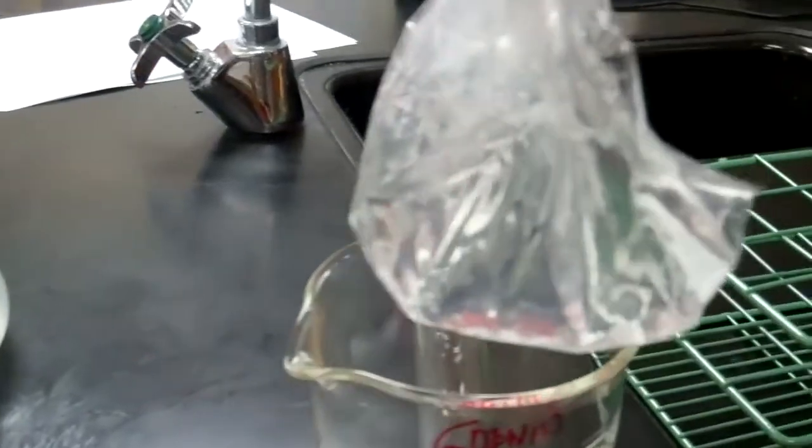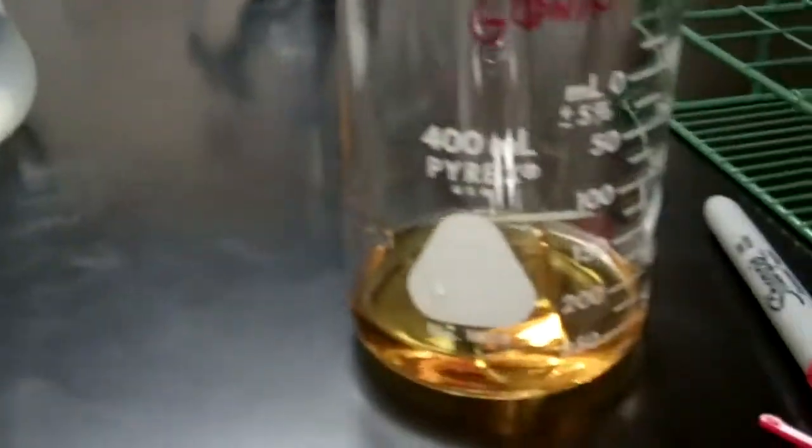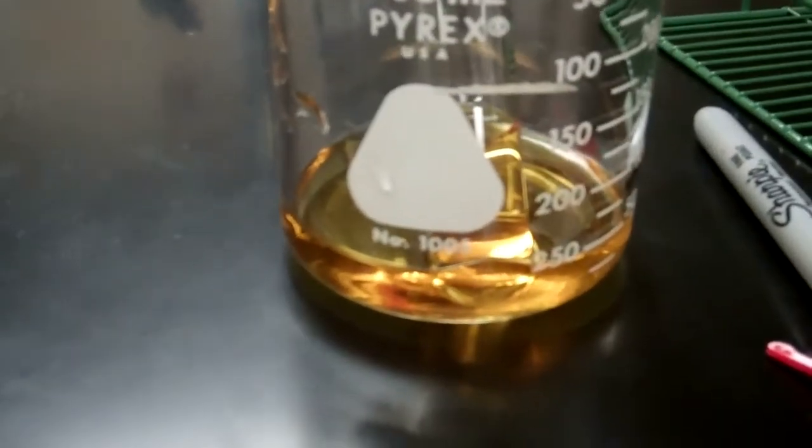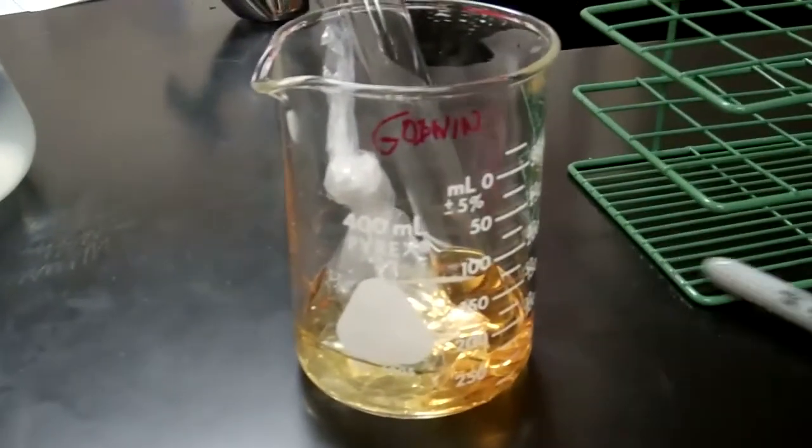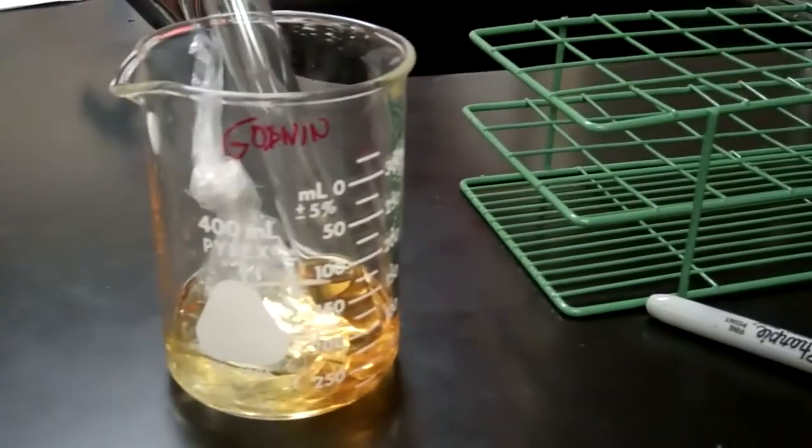And now you can take your cell, which is kind of a foggy white color. My iodine is kind of a golden color. And I'm going to set this into my beaker, and I'm going to leave it overnight and we'll see what happens tomorrow.